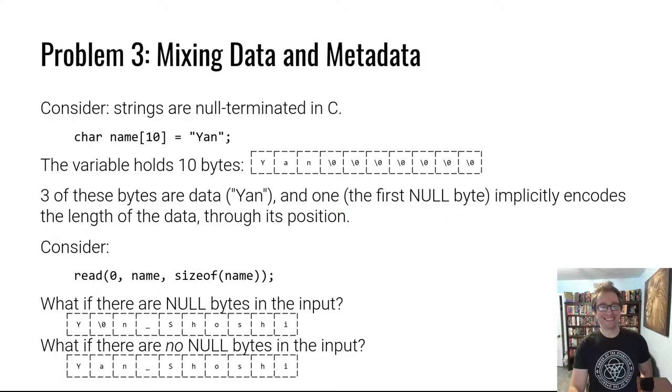All right, let's move on to problem three. C mixes control data and non-control data in the same way. C mixes data and metadata, and this is also problematic. Consider the simplest example: strings. You should all know strings are null-terminated in C. When you have a string, say